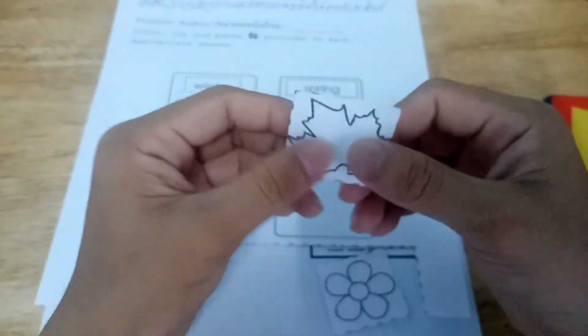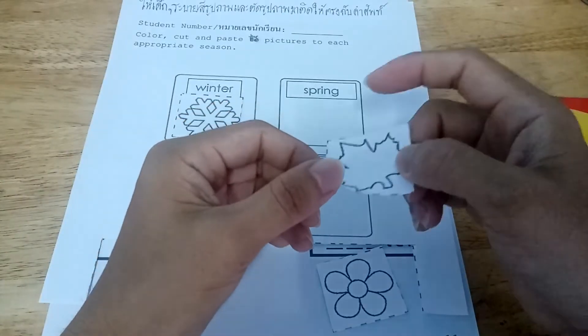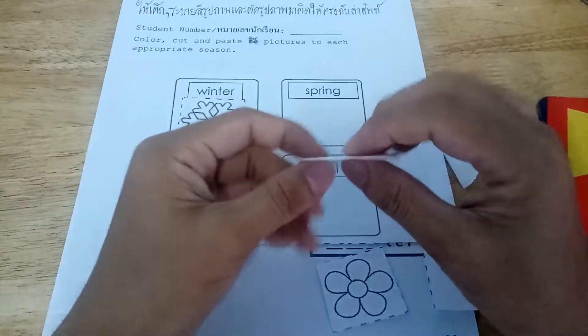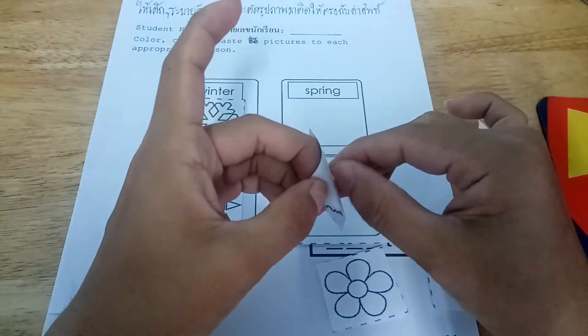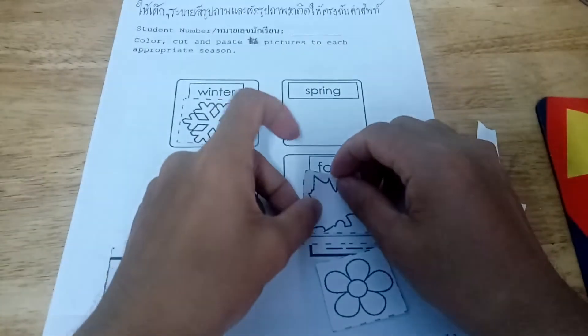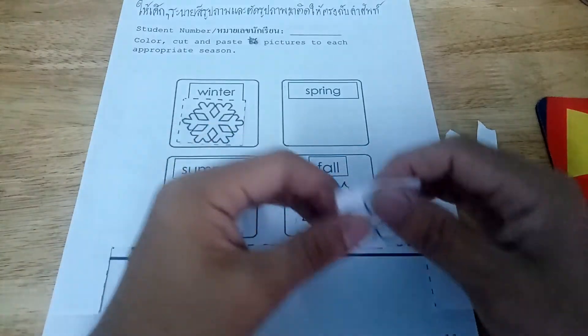Okay, next is this one. This picture represents for? Is it for spring, or fall? Okay, this picture represents for? Fall. Okay, that's it.